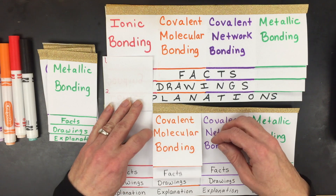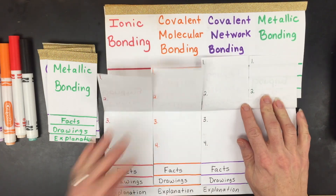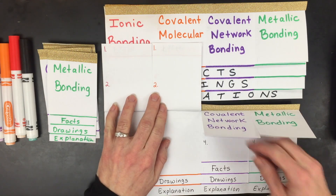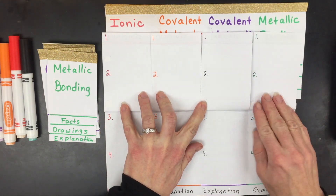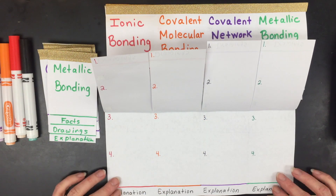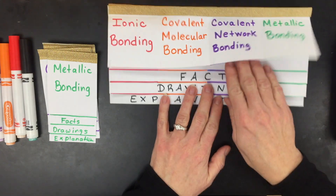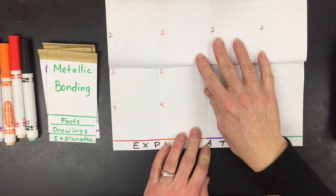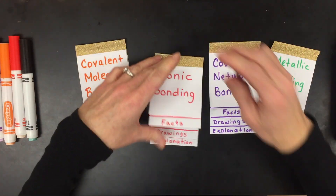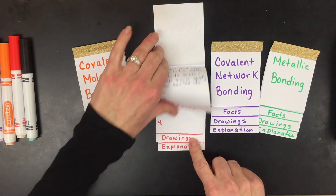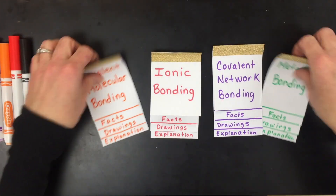On the inside, there are four specific facts for each bond type, four drawings for each bond type, and four brief written explanations of those different properties and why they exist. Whether you keep the foldable sections all on one big flap, cut them separately so you can view each individually, for example, ionics are hard, rigid crystals and solids — there'll be a particulate drawing of why they behave that way and a written explanation.